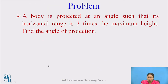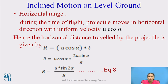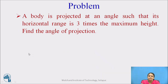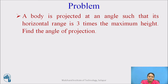By using all these equations — equation of trajectory, time of flight, maximum height, and horizontal range — you can calculate the parameters of the projectile. A problem is given: a body is projected at an angle such that its horizontal range is 3 times the maximum height. Find the angle of projection. Pause the video and try to solve the problem using the above equations.